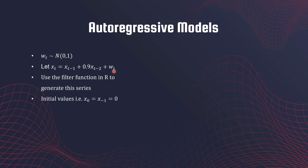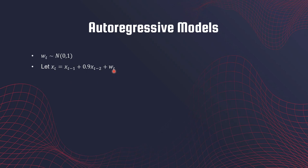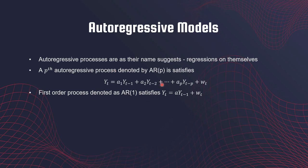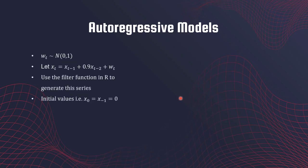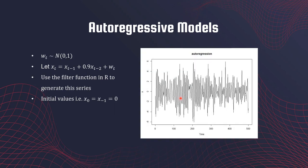You have to worry about the initial values in autoregressive models. For example, Y at time point one is going to be eight times Y zero plus W one. For an AR(2) model, Y one depends on Y zero and Y minus one. We're going to set all of the initial values to zero.